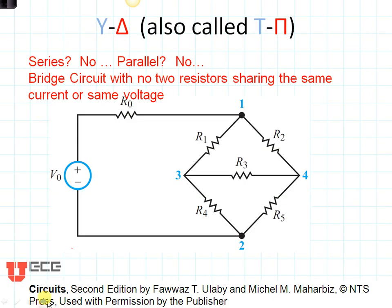Y and delta transformations are used for circuits that are neither series nor parallel. Take a look at these resistors here, and particularly R1 through R5. Are they in series? No. Are they in parallel? No.